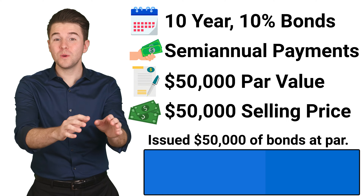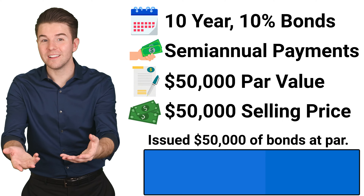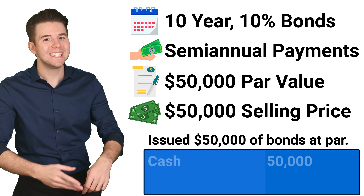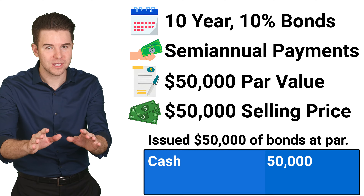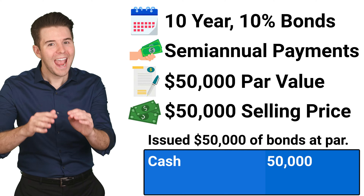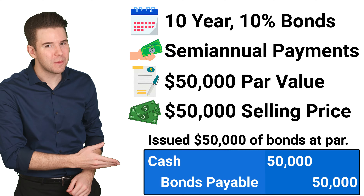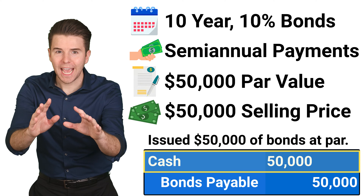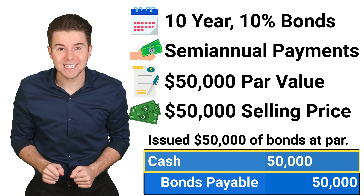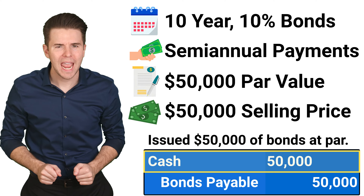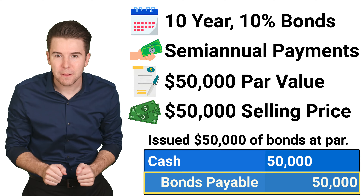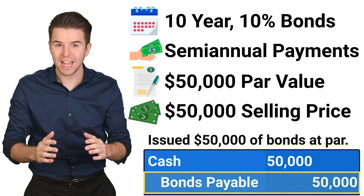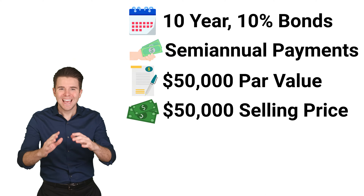To record the issuance or sale of the PAR value bonds, we debit cash for $50,000 and credit bonds payable for $50,000. The debit to cash increases that asset account and the credit to bonds payable increases that liability account.